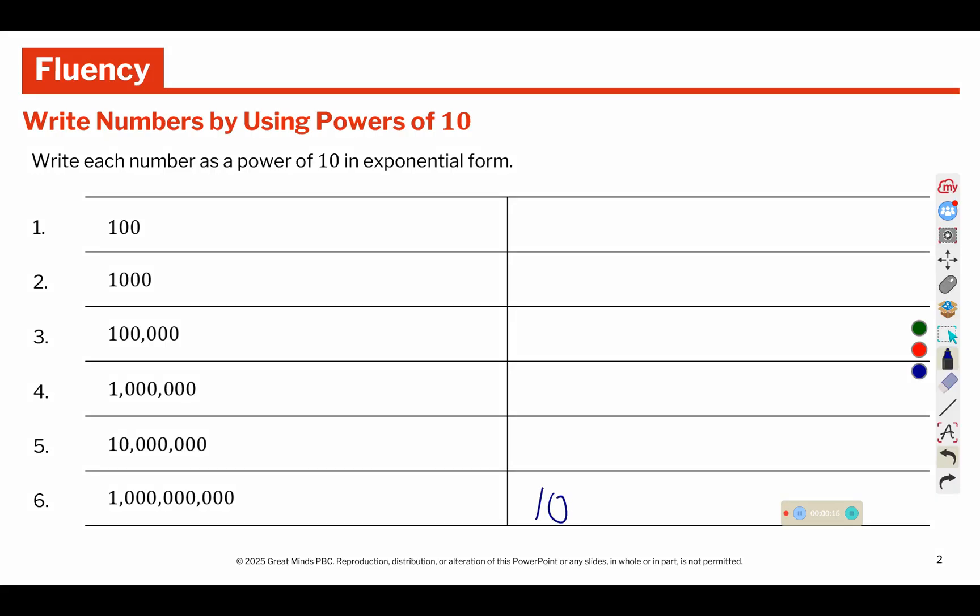So we're going to start with a base of 10, and because this one has 9 place values after the 1, this is going to be 10 to the 9th power. You can count them up: 3, 6, 9.